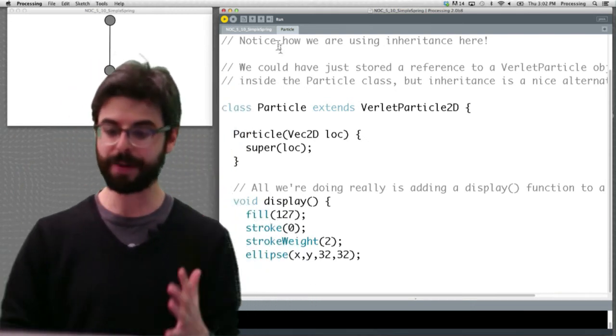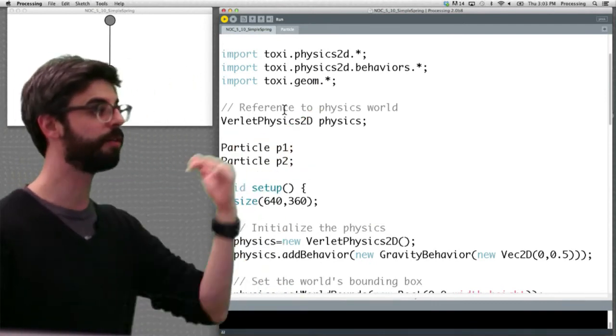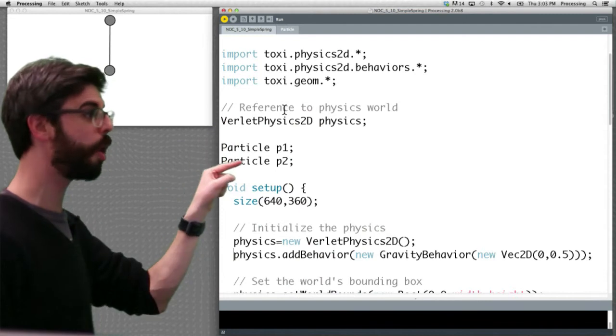You can really just work on adding a display method to the particle which extends verlet particle 2d. So now if we look into the main program, we can see a few things here. One is, here's our world, verlet physics 2d physics.